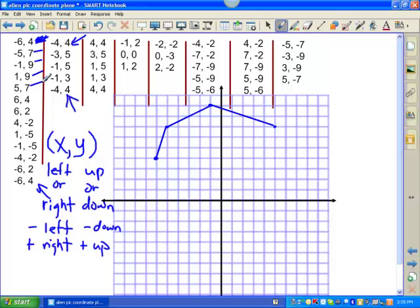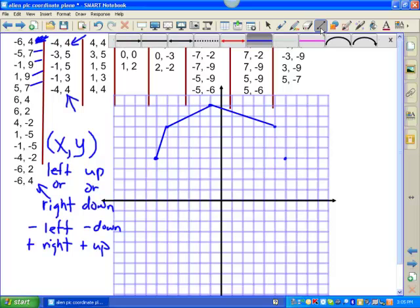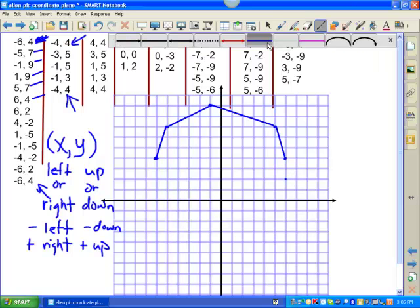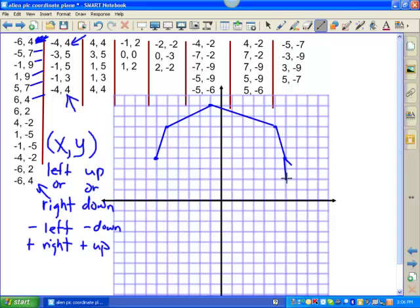Six, four. Over six. Up four. Done. Over six. Up two. And we continue until we finish. And we do each column separately.